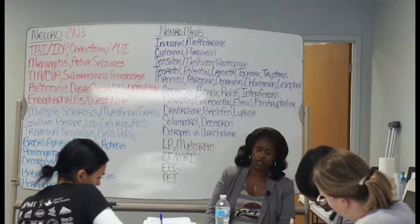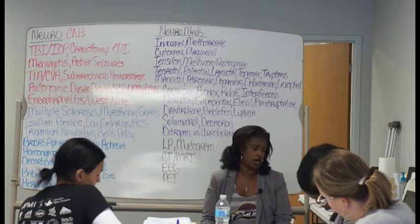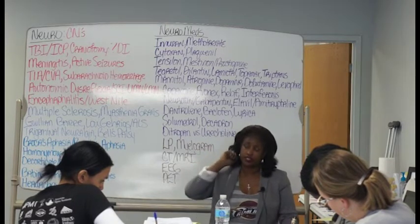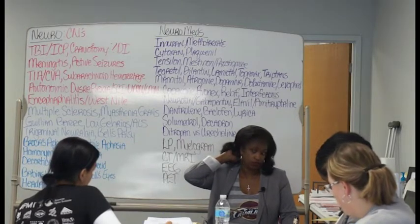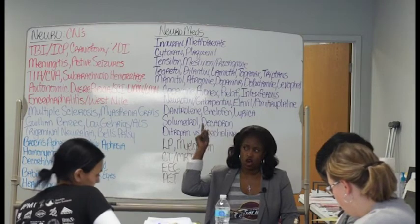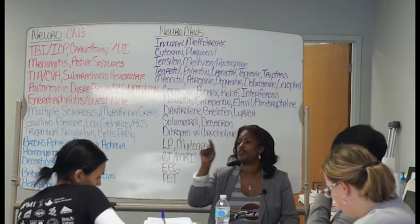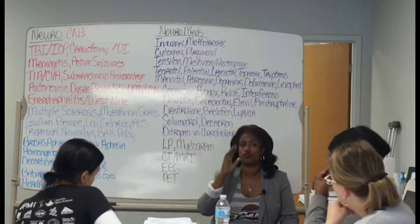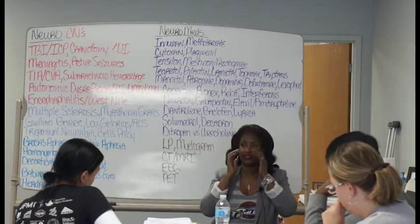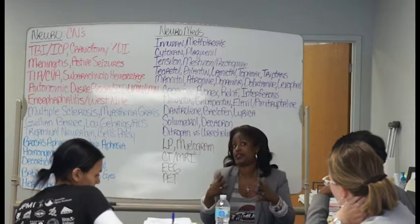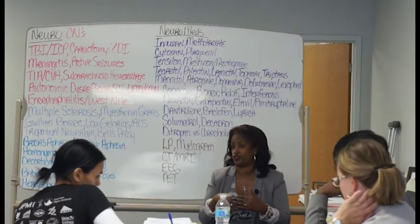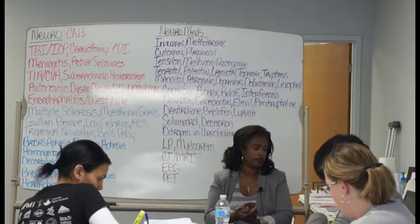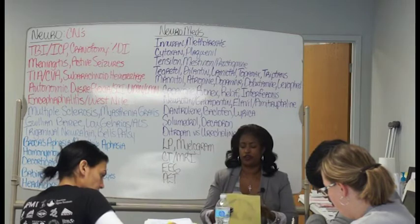Write this down: otorrhea and rhinorrhea indicate a basilar skull fracture. A basilar skull fracture is at the base of the skull. When the injury occurs, the impact goes deep — it punctures where the spinal cord enters, and because there's a hole, spinal fluid leaks into the ears and out the nose. Remember: basilar skull fracture puts the patient at risk for meningitis.